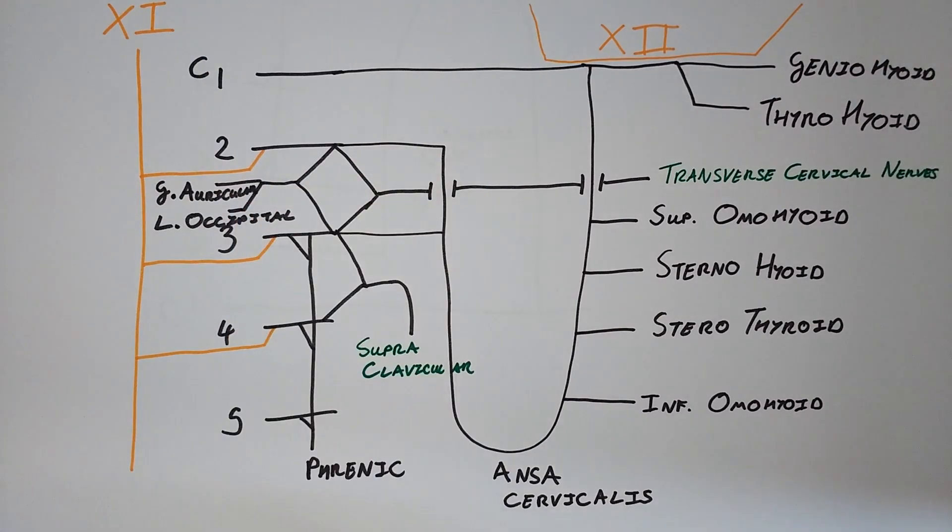Now I'm drawing the lesser occipital nerve coming off of both C2 and C3, but do be aware that some literature cites it as only coming off C2. And that's us. I hope this clears things up for you. See you next time, folks.